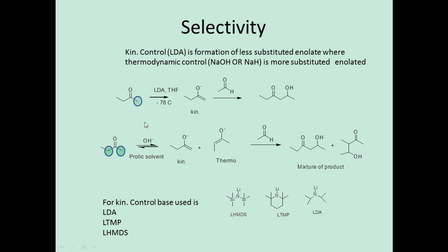LDA provides kinetic control because of its steric bulk. Other reagents used for kinetic control include LDA, LiTMP, and LHMDS — all highly hindered bases. LHMDS is a highly hindered base that abstracts the less hindered alpha-hydrogen selectively, giving very high kinetic control. This illustrates the kinetic versus thermodynamic control of aldol condensations.